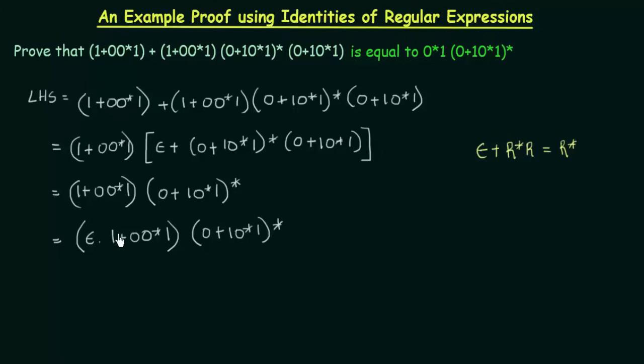I have this term, I have just written it down here and I have added an epsilon symbol. This is another identity that we have studied. Epsilon R is equal to R. If you just have epsilon before R, that is still equal to R. We have studied this identity before. So I am applying it here. I am just putting an epsilon before this expression. Even if I put an epsilon here, it is still equal to this. So I can write this as this one.